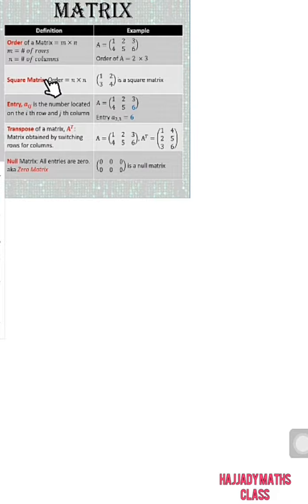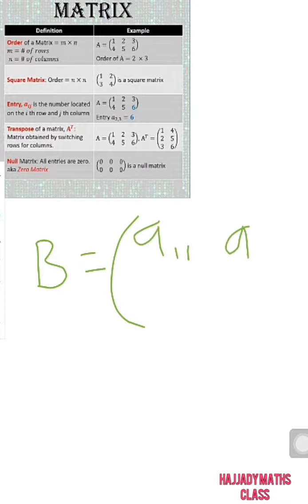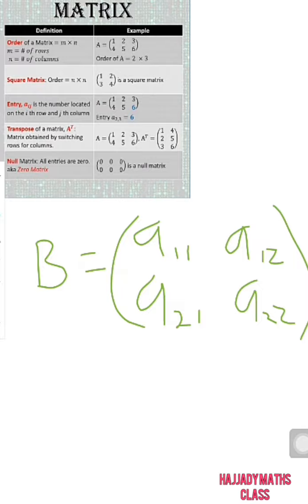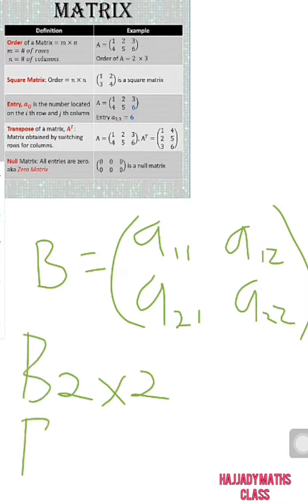Secondly, we have what is known as a square matrix. Given matrix B to be equal to A11, A12, A21, A22 — this is a square matrix. A square matrix is one where the number of rows and the number of columns are equal. In this case we have two rows and two columns. So a two by two matrix is a square matrix. Or we could have a three by three matrix — it is also a square matrix.